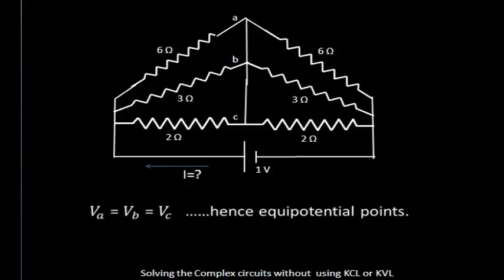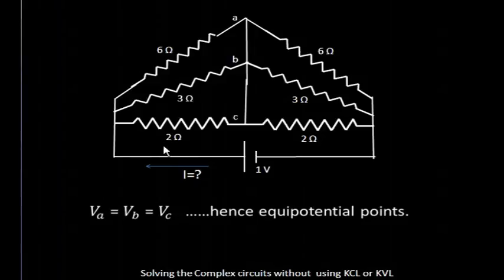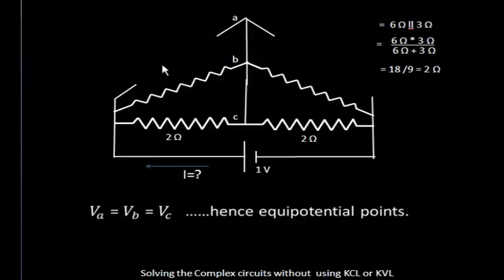In this case, we have shorted these points. When we have shorted them, the resistance between those points does not hold any importance and we have removed the resistance between A-B and B-C. Further, we can see that these three resistances have come in parallel and these three resistances have come in parallel. Now it is very simple — we need to solve these two parallel combinations first, and then the equivalent resistance of these two will be in parallel with this resistance.